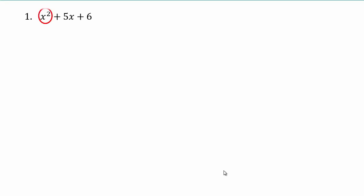Assuming you've come back — we have x squared times 6, so that would be 6x squared. We need two numbers that multiply to give you 6 and add to give you 5. That's 3 times 2. So 3x plus 2x adds up to give 5x and multiplies to give 6x squared.